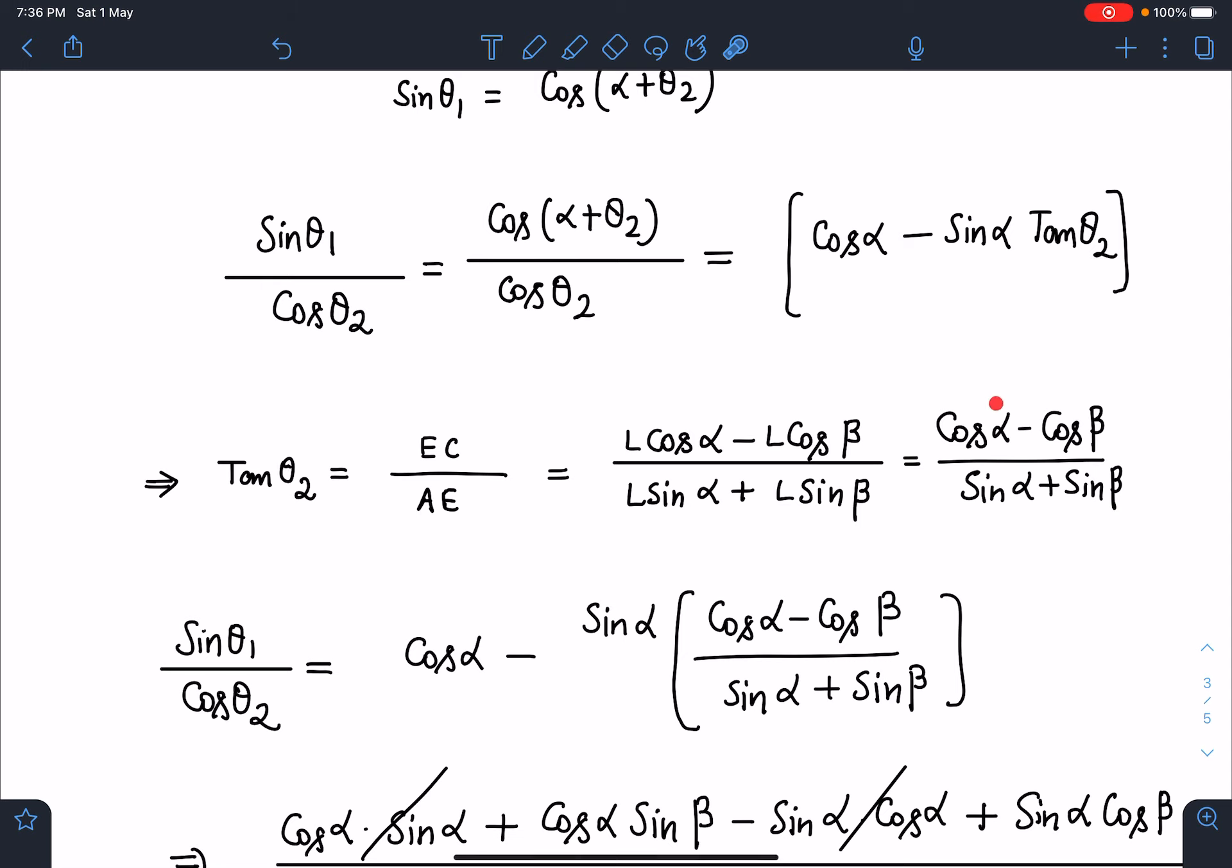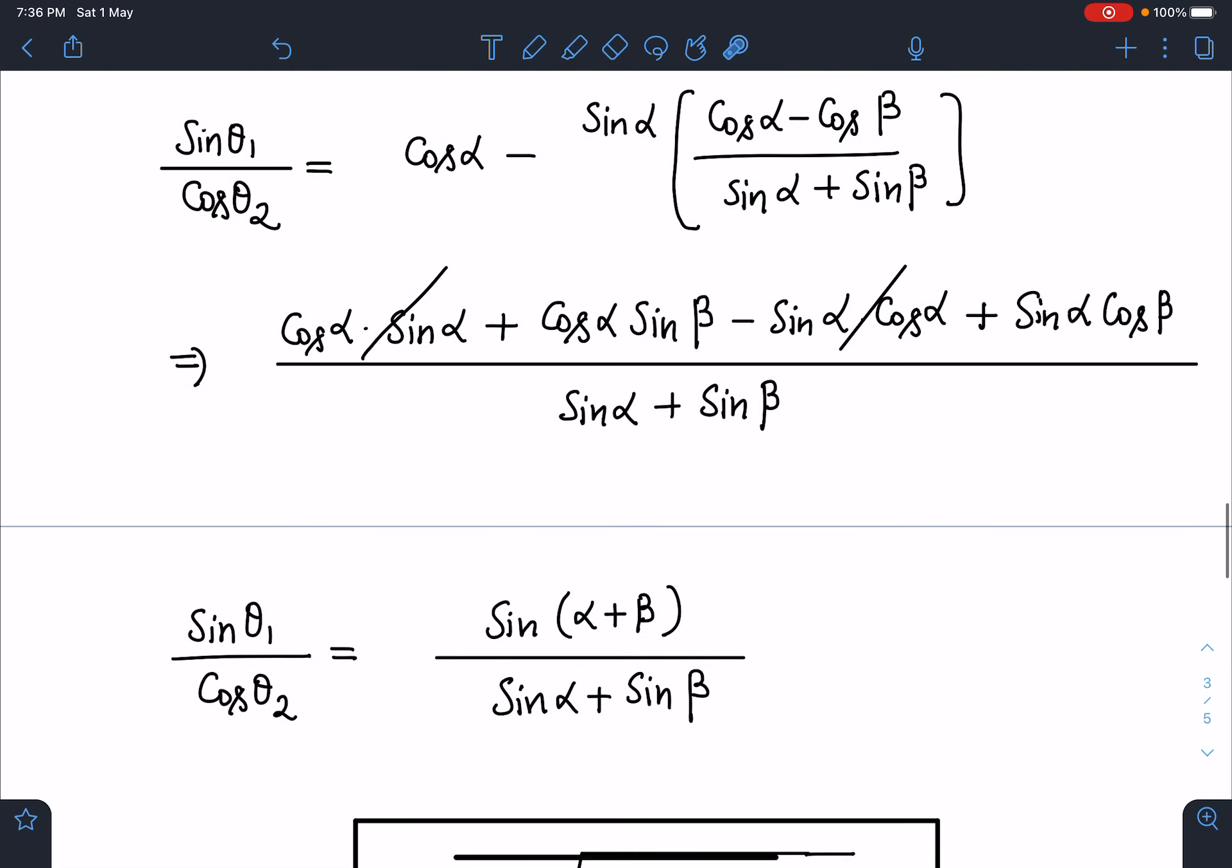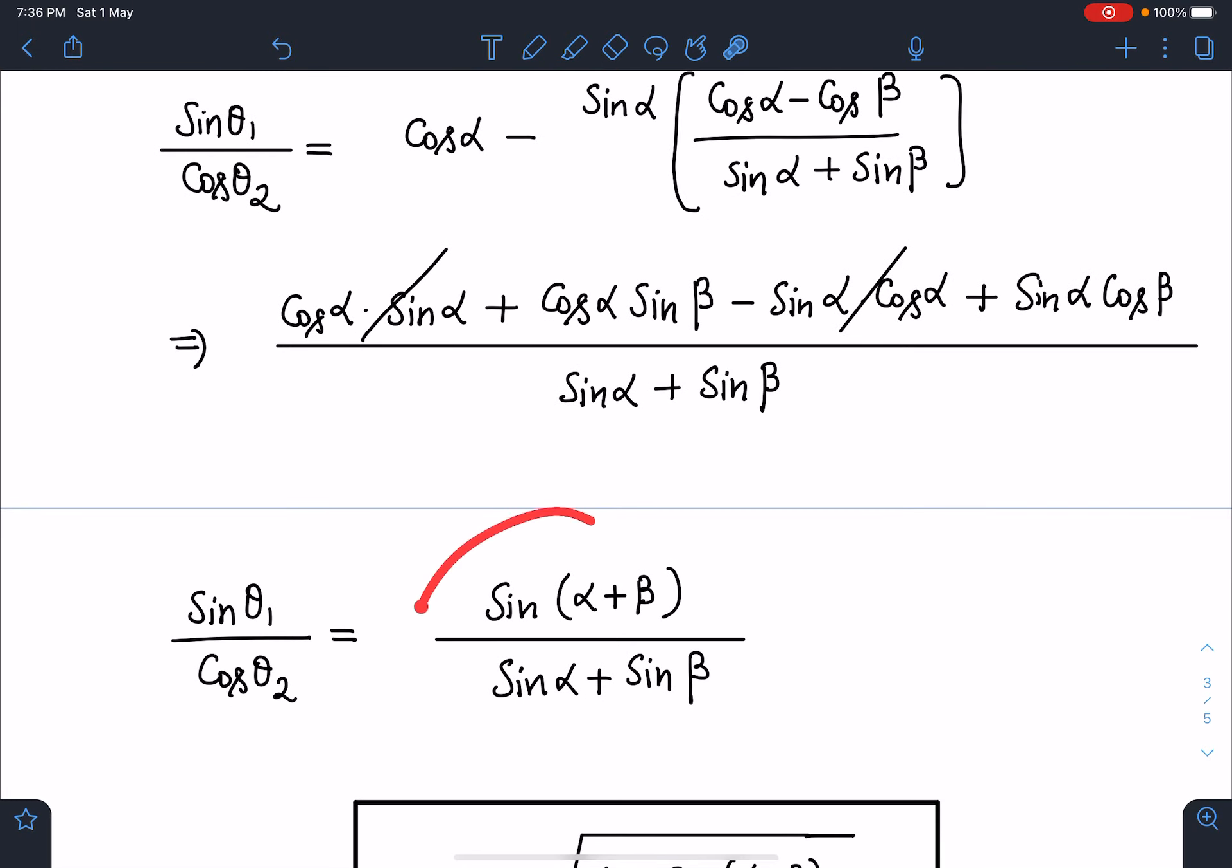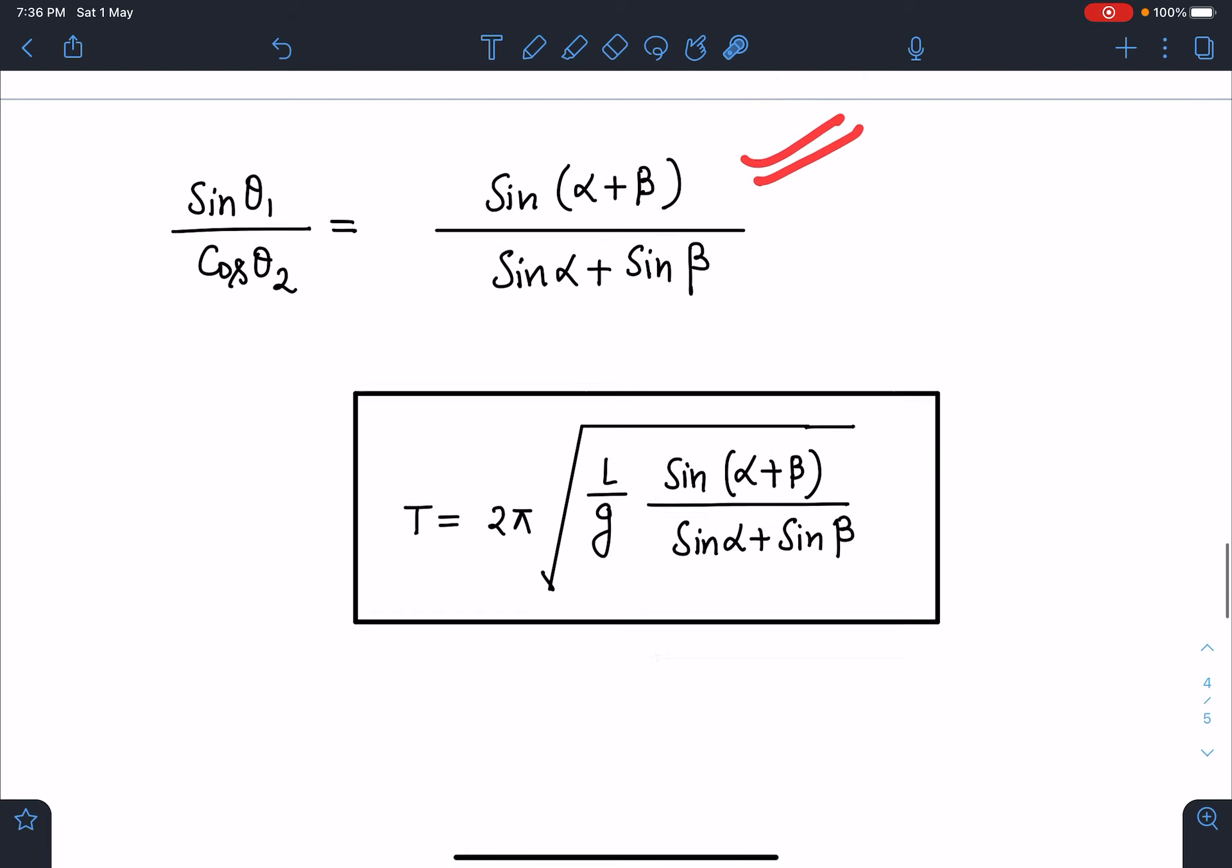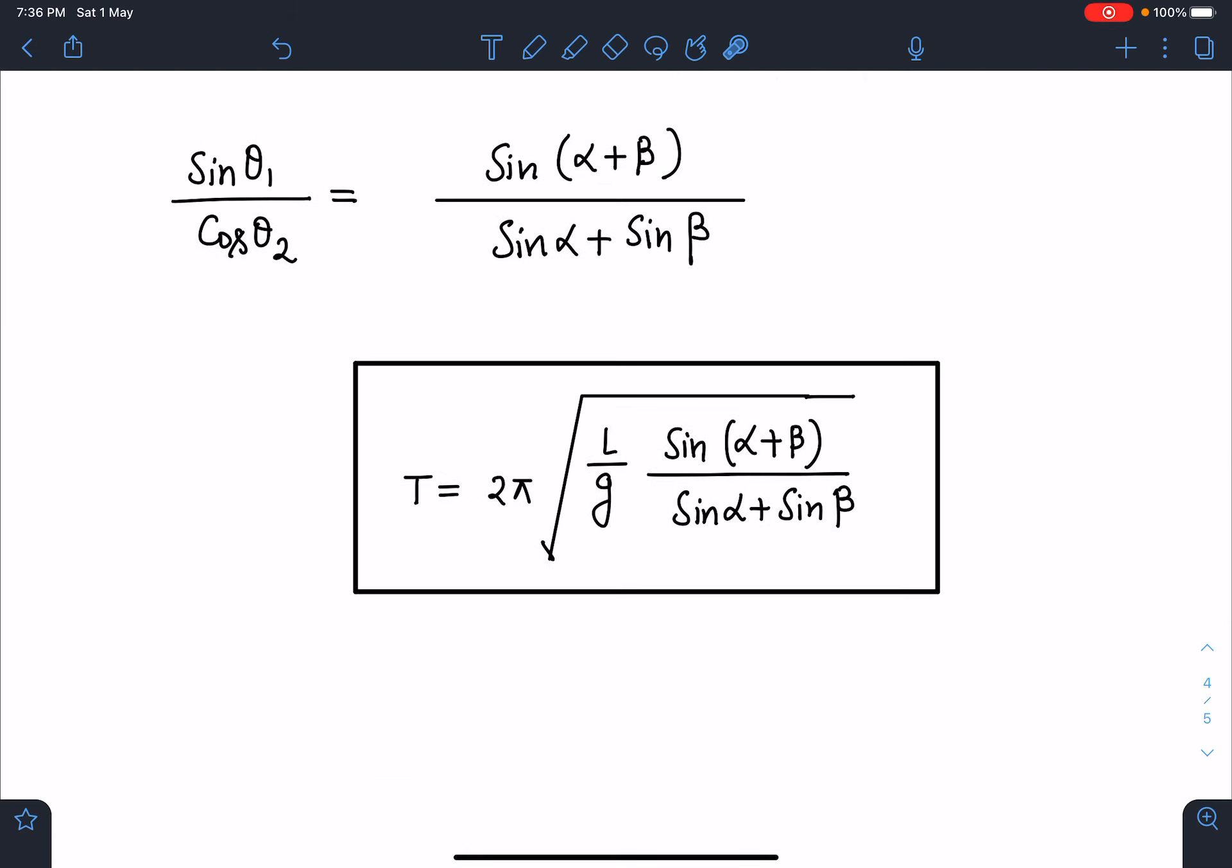When I substitute tan theta2 here and simplify, a very nice term will come out that is sin of alpha plus beta divided by sin alpha plus sin beta. So I can write here this T is equal to 2π under root of L by g and that ratio of sin theta1 by cos theta2, it is going to give me sin of alpha plus beta divided by sin alpha plus sin beta. So this is going to be the final answer for this problem.